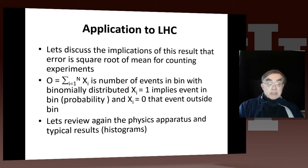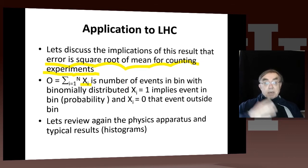This is just a recap - error is the square root of the mean for counting. This is really important. It's sort of trivial, but actually most important things are trivial. This underlies everything we do. The binomial distribution is 1 for events in the bin, and 0 for events outside the bin. Let's come back and get back to physics again, because we've been doing too much mathematics, and remind ourselves how this looks for the actual data that people take.